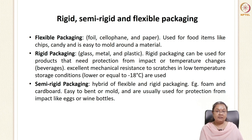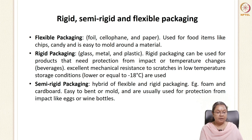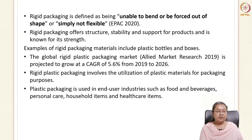Semi-rigid packaging materials are hybrids — their properties lie between flexible and rigid packaging. They mainly include foams and cardboards, which are used for giving protection to products like eggs and wine bottles. Rigid packaging was defined as being unable to bend or be forced out of shape, or simply not flexible — a definition put forth by EPAC in 2020.